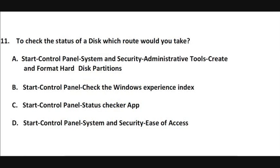Question 11. To check the status of a disk, which route would you take? A- Start, Control Panel, System and Security, Administrative Tools, Create and Format Hard Disk Partitions. B- Start, Control Panel, Check the Windows Experience Index. C- Start, Control Panel, Status Checker App. D- Start, Control Panel, System and Security, Ease of Access.